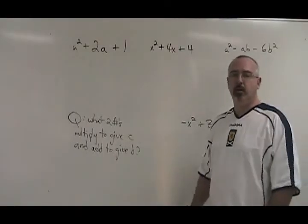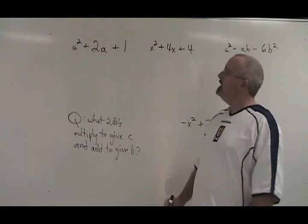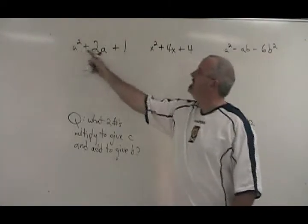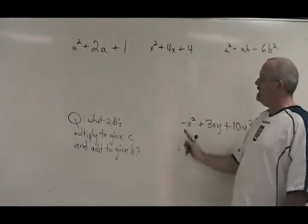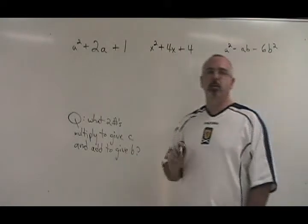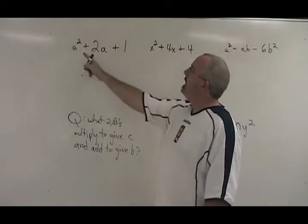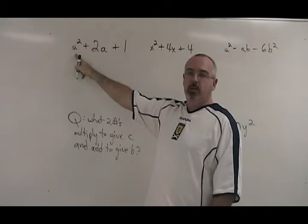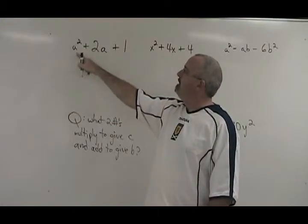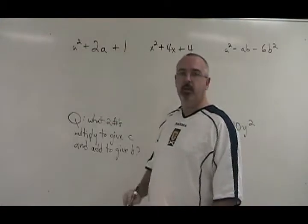The third method of factoring is what I call simple trinomial. It's simple because each of these trinomials have a first term whose numerical coefficient is 1. The first thing to do is to identify the numerical coefficients of the first, second, and third terms in your trinomial.